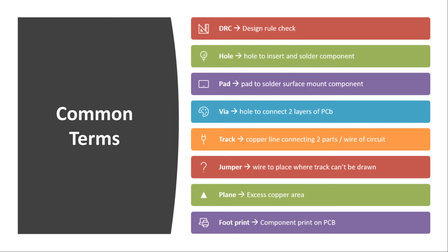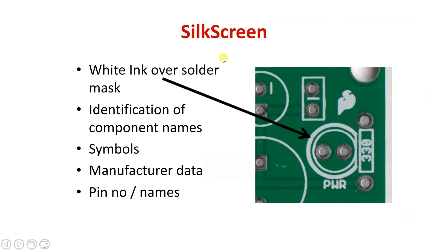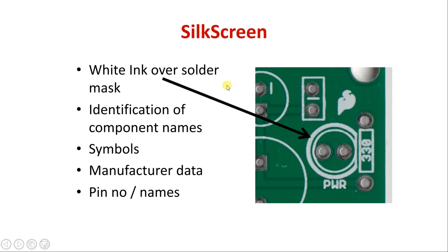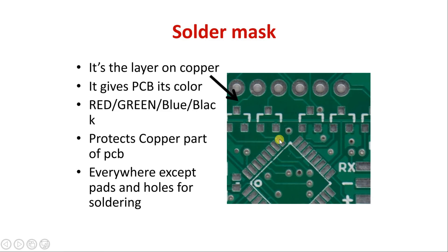The most common PCB terms you must be aware of before beginning PCB study are as follows. First, DRC — Design Rule Check — which most software uses to check the PCB design for any errors. Then there are holes, which are through-holes where we insert the component. There is also a pad — if you are using an SMD type PCB, the pad looks like a flat surface for surface-mount soldering. This is called a pad, and the through-hole is called a hole.